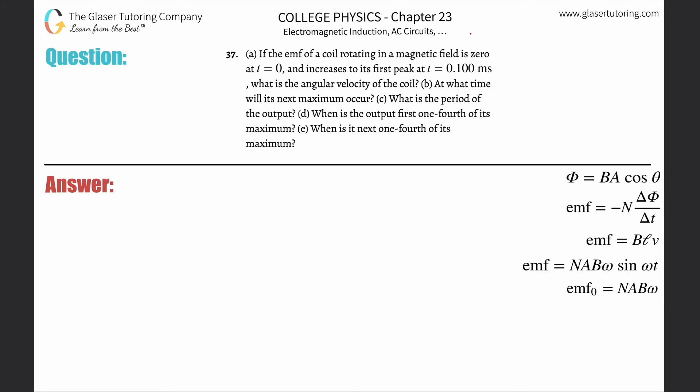Number 37, letter A: if the EMF of a coil rotating in a magnetic field is 0 at t equals 0 and increases to its first peak at t equal to 0.1 milliseconds, what is the angular velocity of the coil? Please refer back to number 36 for a complete explanation of this topic — I'm going to run through the answers on this one, as the detailed explanation with graphs was included in the prior problem.